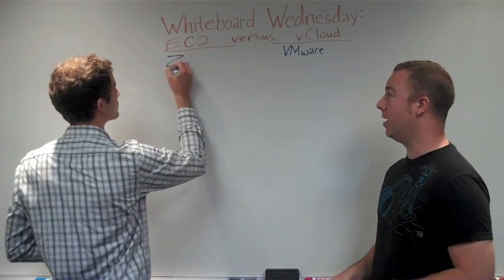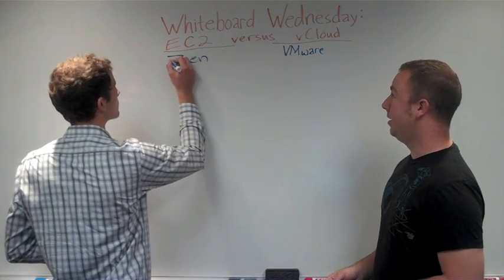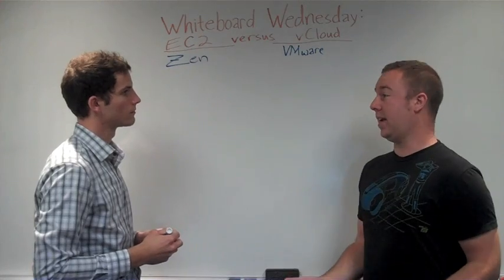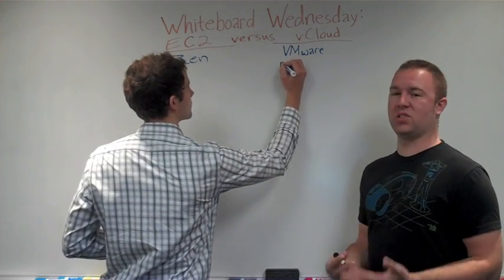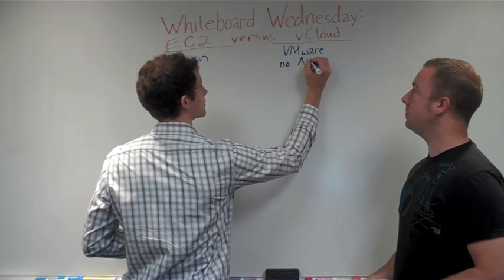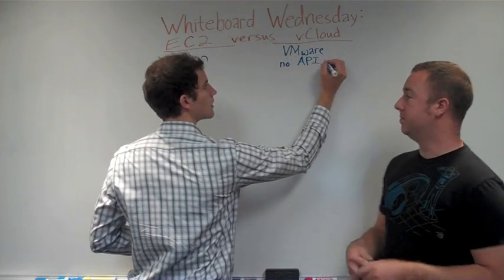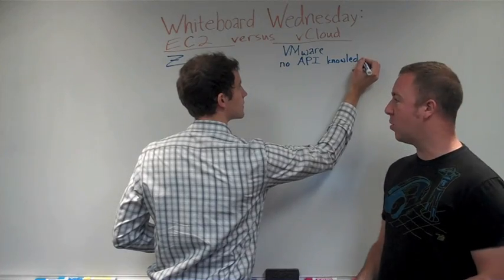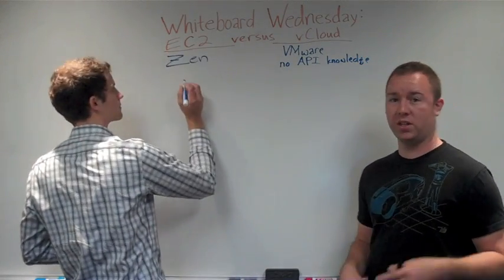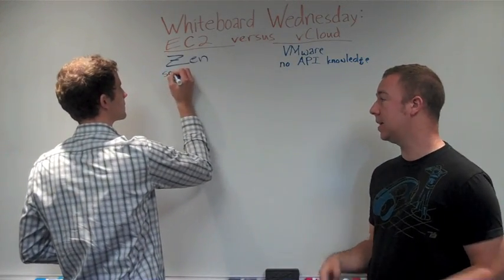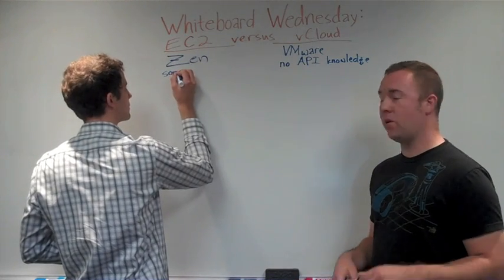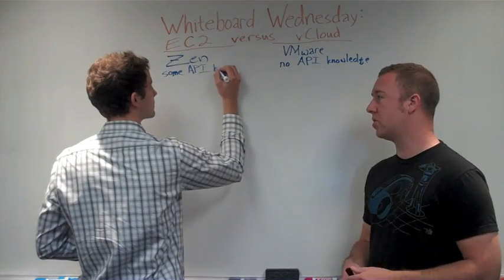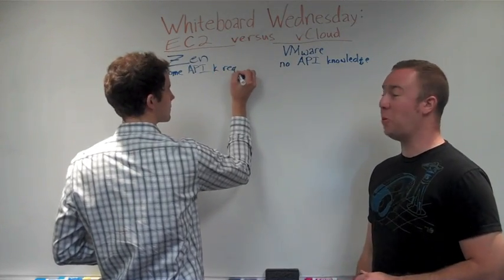The first thing I've got to call out right away is that with vCloud or vCloud Express, I don't need any API knowledge. That's the first thing that stands out to me. When you log into vCloud Express, you've got a web-based dashboard. I can click and spin up a virtual machine from one of the templates in the library and I'm good to go. There were no API calls I had to make, no public-private keys I had to enter — it was all just ready for me to click the go button.